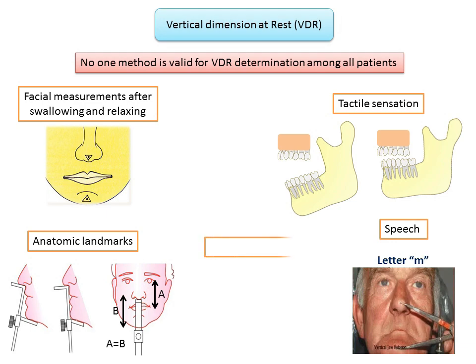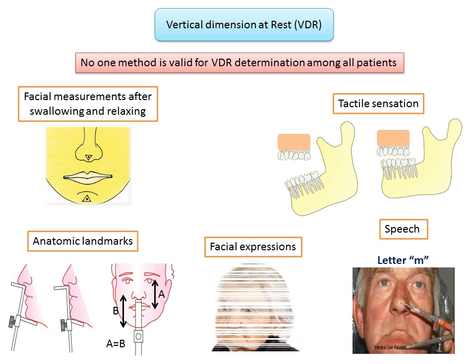Another method is based on facial expressions. The skin around the eyes and chin should be relaxed, the nostrils relaxed, and breathing unobstructed. The upper and lower lips should have slight contact in a single plane. If the mandible is protruded, the lower lip will be forward and without contact; if retruded, the upper lip will be in front.